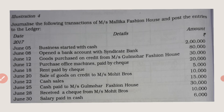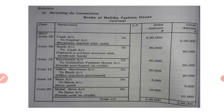June 20: sale of goods on credit to Majors Mohit Brothers — Mohit Brothers account debited to sales account. Sales are always credited because it is income; expenses are always debited, incomes are always credited. Debit 10,000, credit 10,000. Narration: being goods sold on credit.